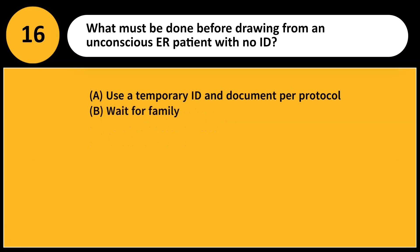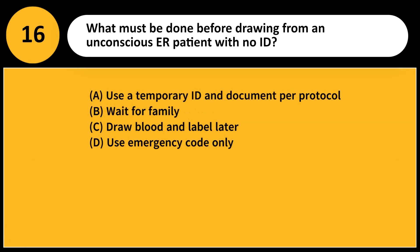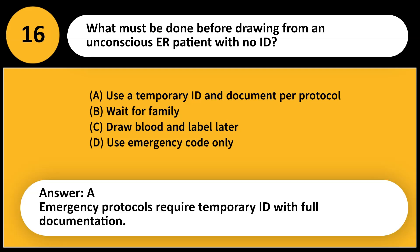What must be done before drawing from an unconscious ER patient with no ID? A. Use a temporary ID and document per protocol. B. Wait for family. C. Draw blood and label later. D. Use emergency code only. Answer: A. Emergency protocols require temporary ID with full documentation.